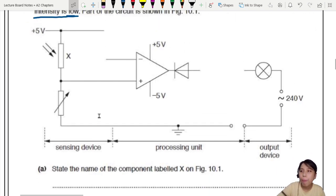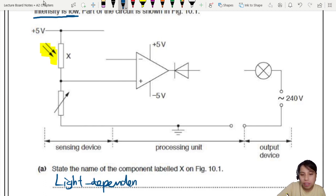State the name of the component labelled X on figure 10.1. What is X? Where is X? X is right here. That one, when you see a resistor with these arrows pointing in, that's your LDR. Not long distance relationship. Your light dependent resistor.